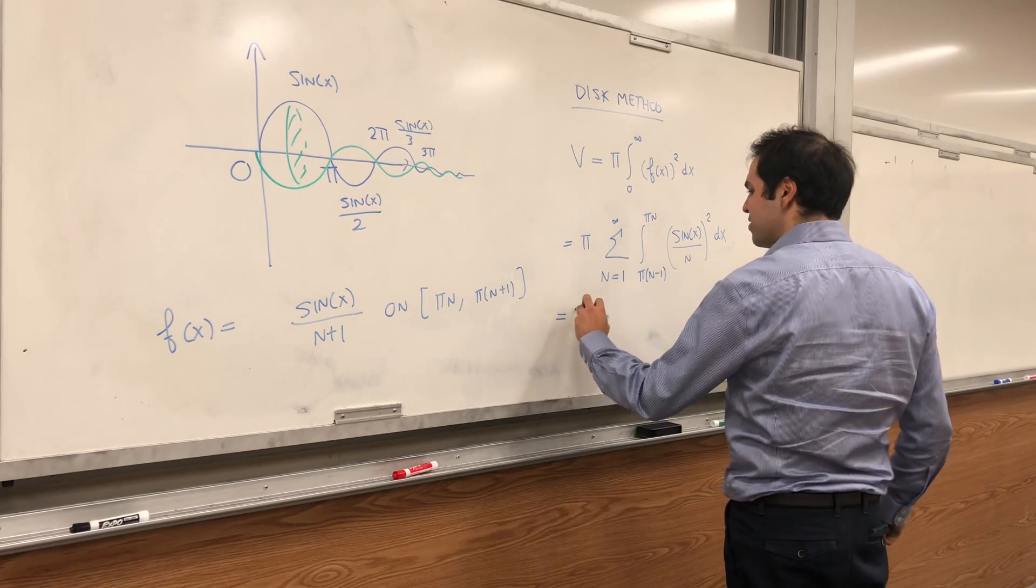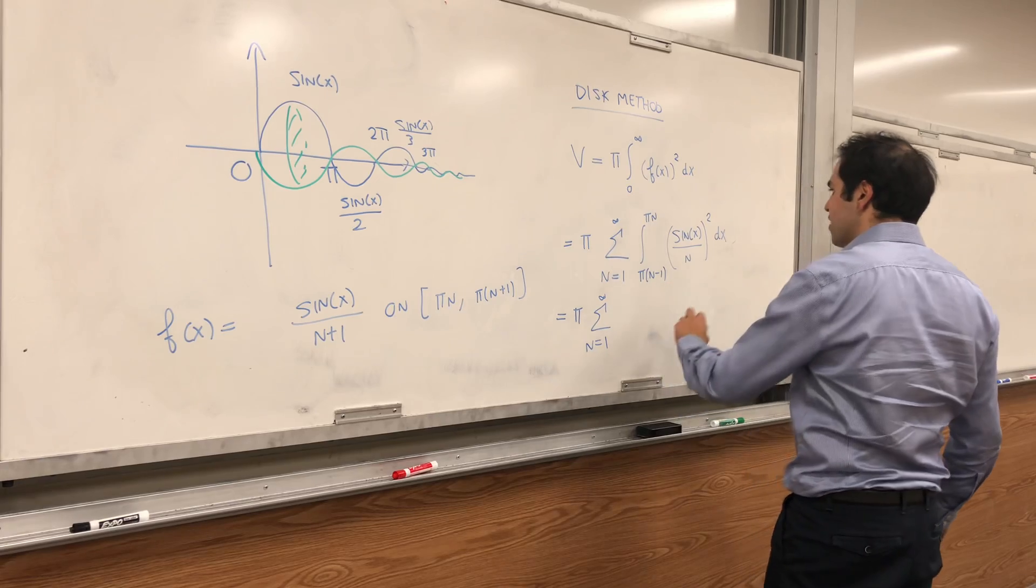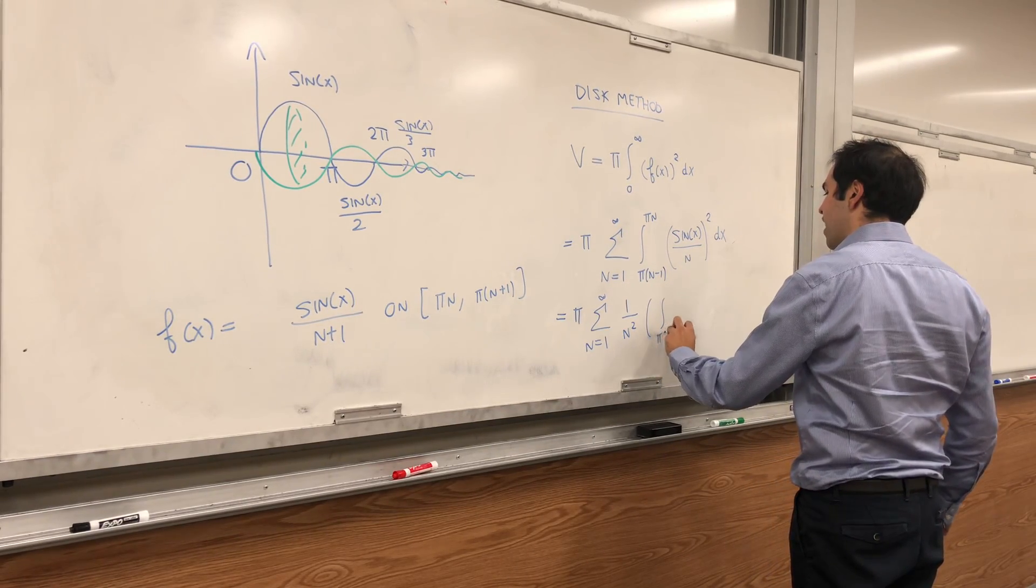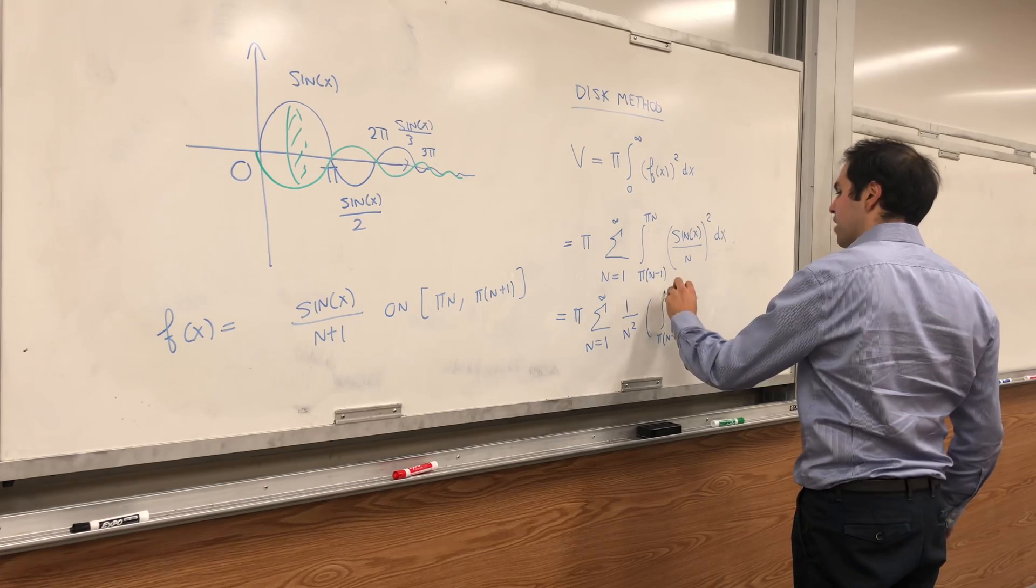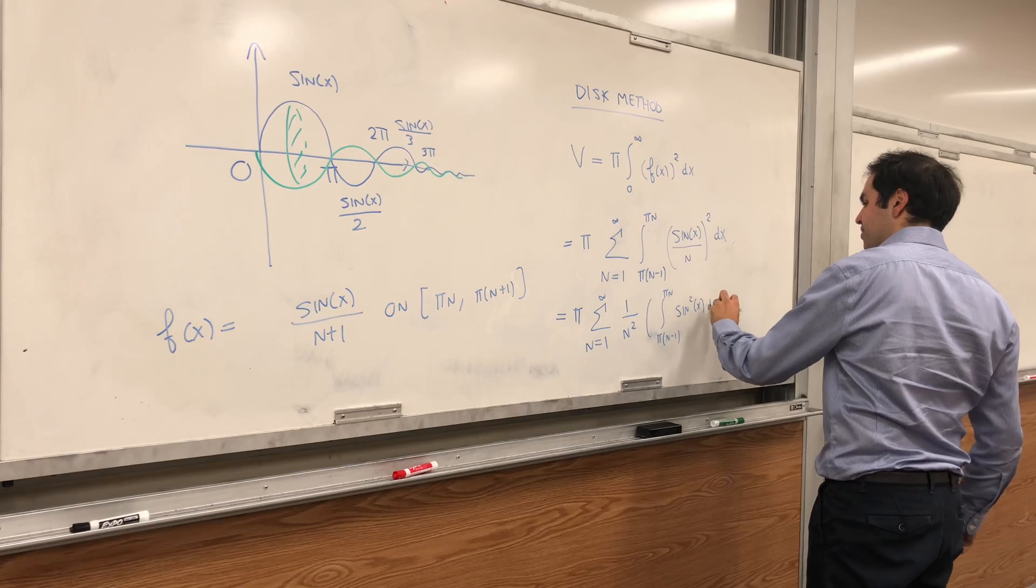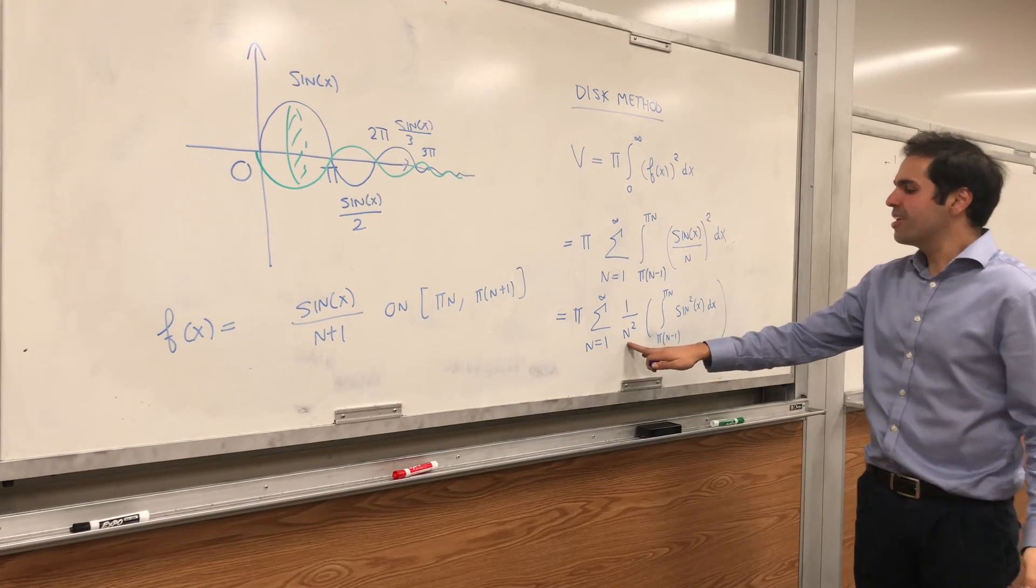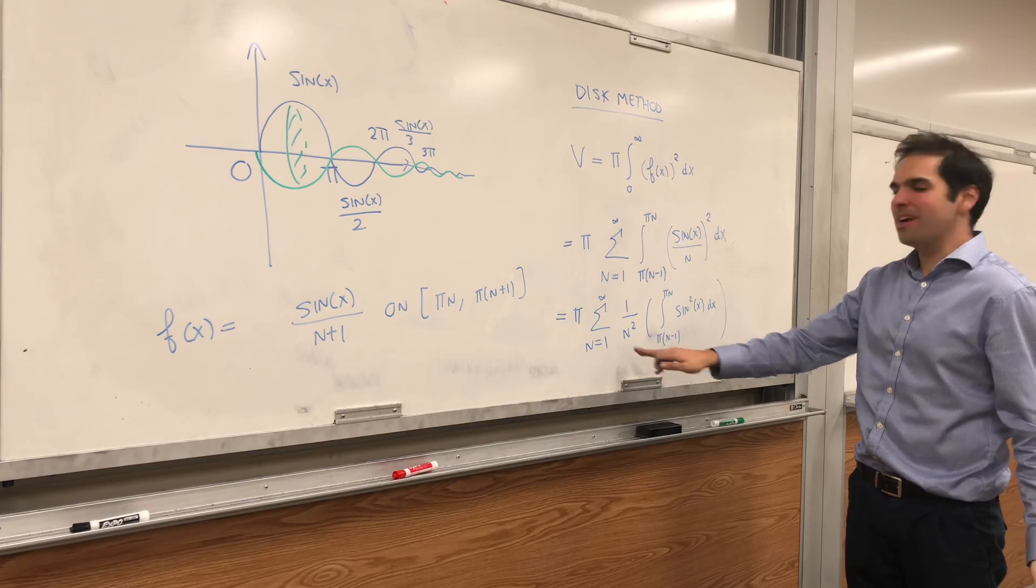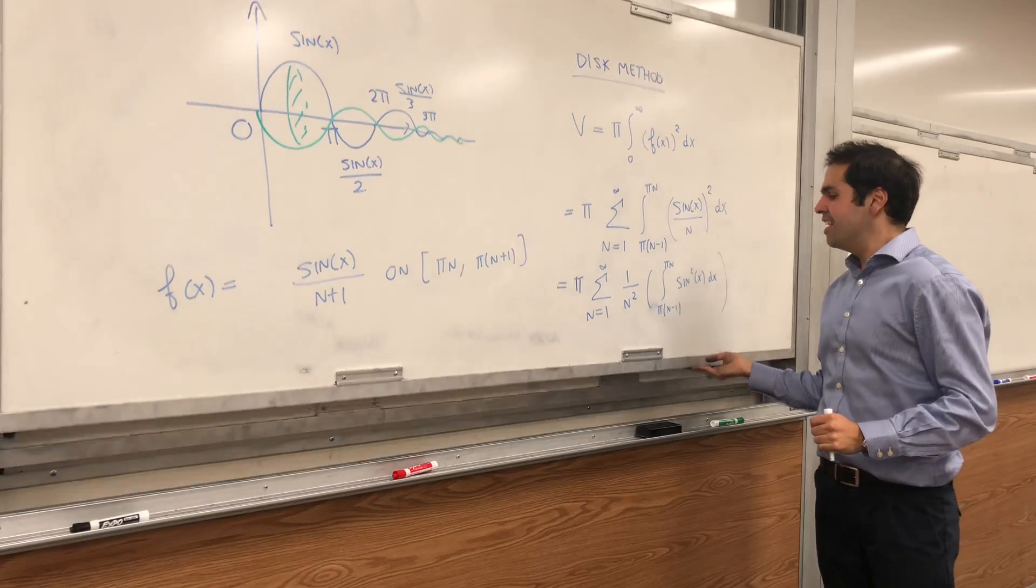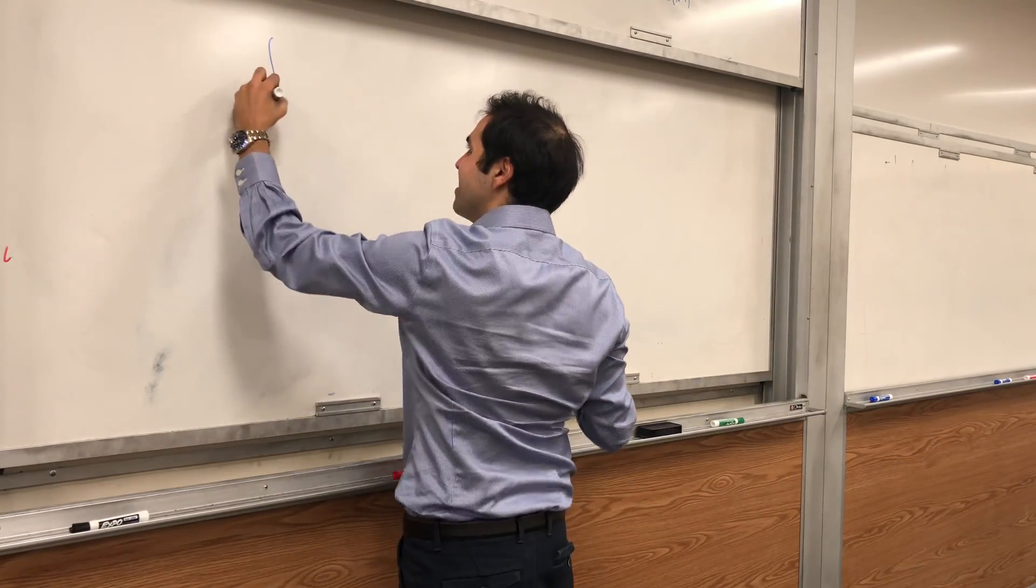And what we get is pi times the sum from n from 1 to infinity of 1 over n squared times this integral, pi n minus 1 to pi n of sine squared of x dx. Now notice, this is a difficult sum, because this 1 over n squared depends on n, and this integral, technically, also depends on n. But I want to show you that, in fact, it does not depend on n.